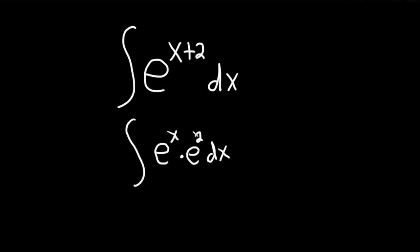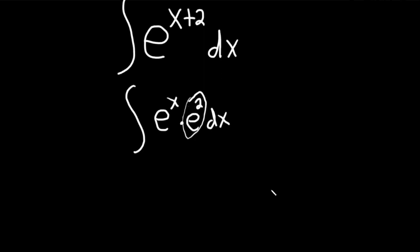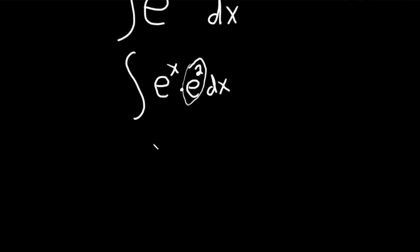And so the reason we did this is because this piece here, this factor, e to the 2, is a number, it's a constant. So you can pull it out of the integral. So this is actually e squared times the integral of e to the x dx.